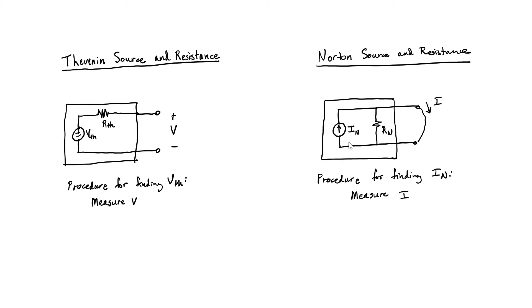Let's find the Norton equivalent current of our Thevenin equivalent circuit. If we measure the current coming out of this circuit, it's just going to be V sub TH divided by R sub TH.